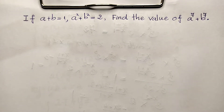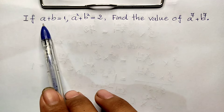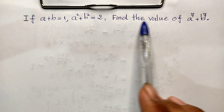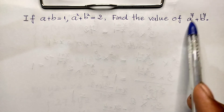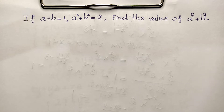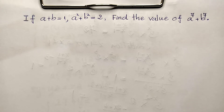Hello everyone, welcome to my YouTube channel. Today I have an exercise: if a plus b is equal to 1 and a squared plus b squared is equal to 2, find the values of the expression a power 7 plus b power 7. Do you know how to solve this? If you know, please try it first, then come back to watch my video to verify your solution. If you like my video, please subscribe to my channel for more exciting videos. Now let's go to the solution together.